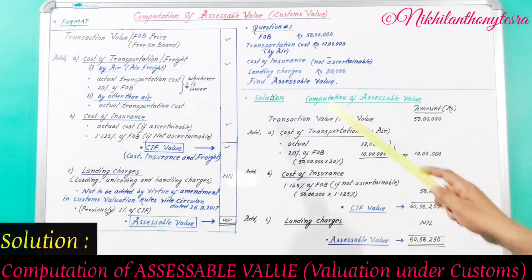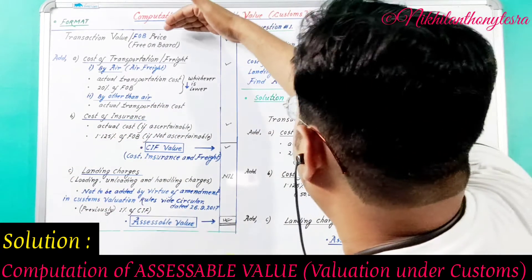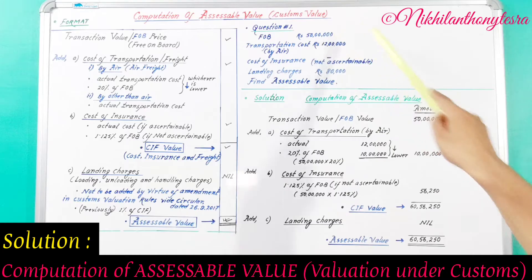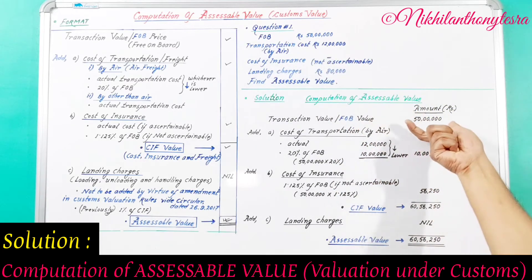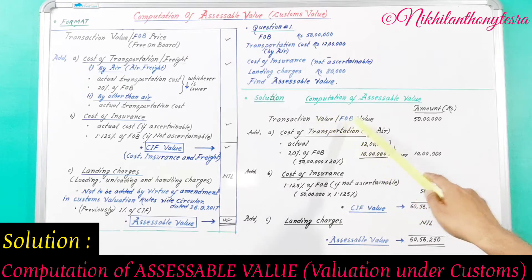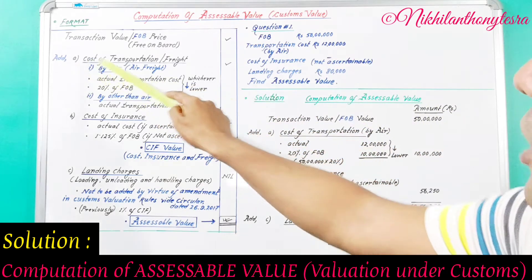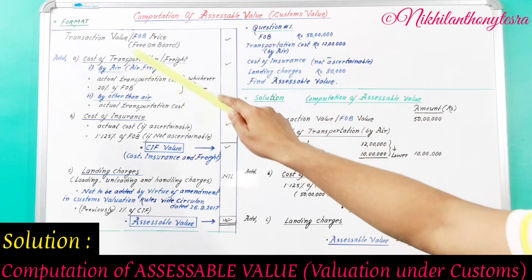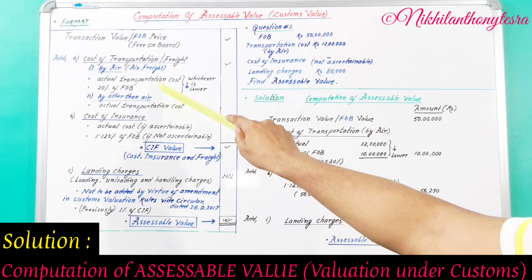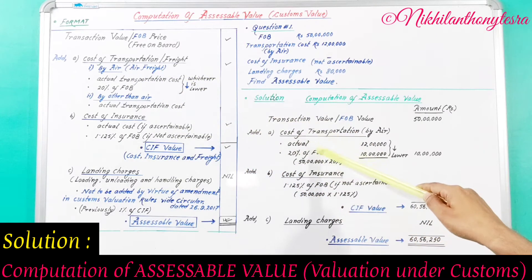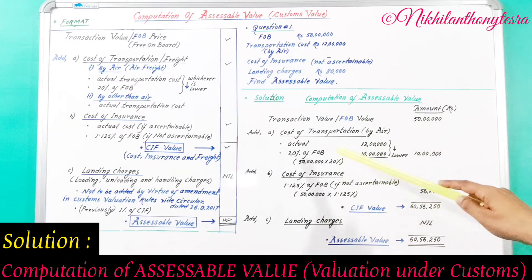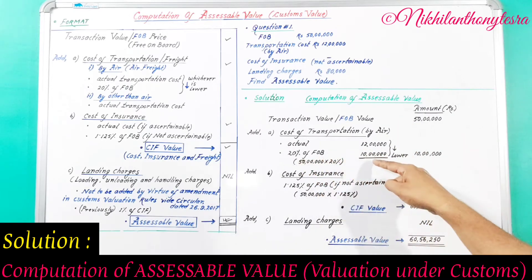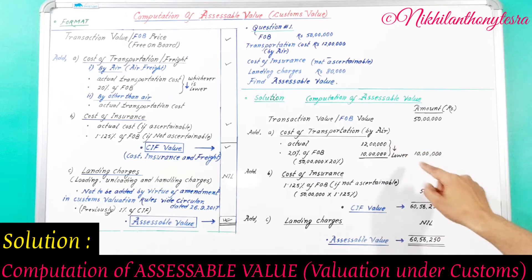Solution — computation of accessible value. FOB value is given as Rs. 50 lakhs, so we take Rs. 50 lakhs as transaction value. Next, we add cost of transportation. Since it is by air, the formula is: actual transportation cost vs. 20% of FOB, whichever is lower. Actual cost is Rs. 12 lakhs; 20% of Rs. 50 lakhs is Rs. 10 lakhs. The lower of the two is Rs. 10 lakhs.